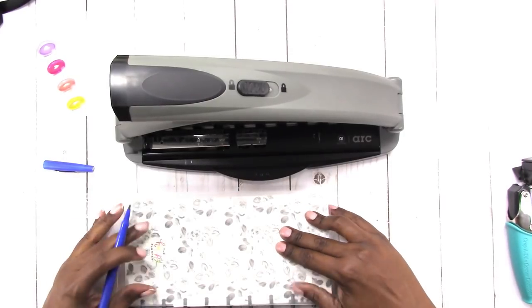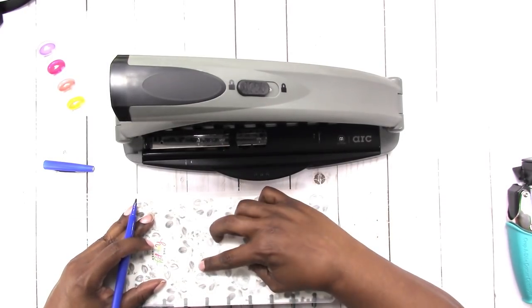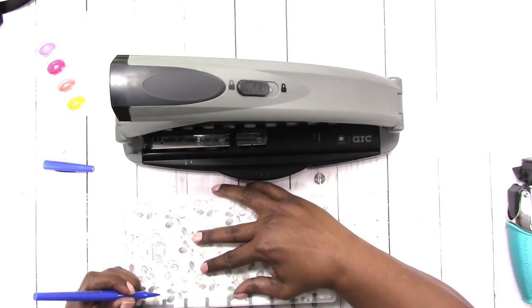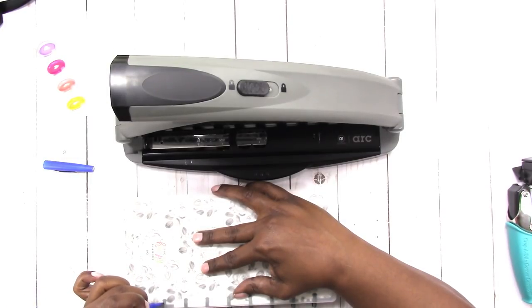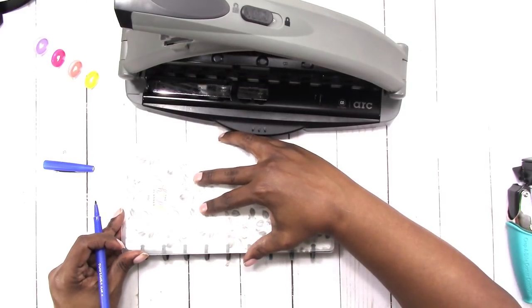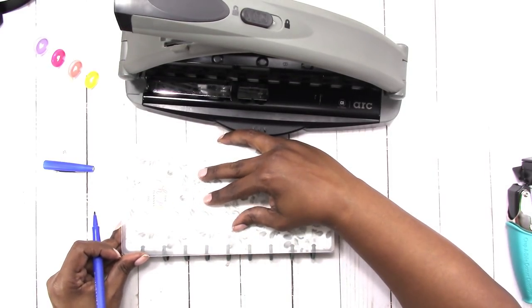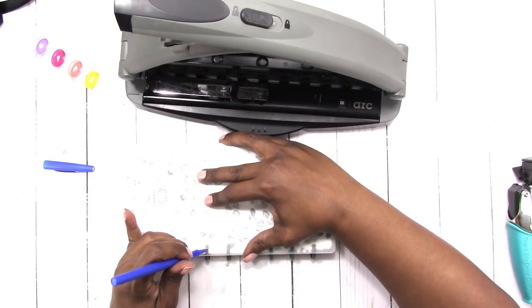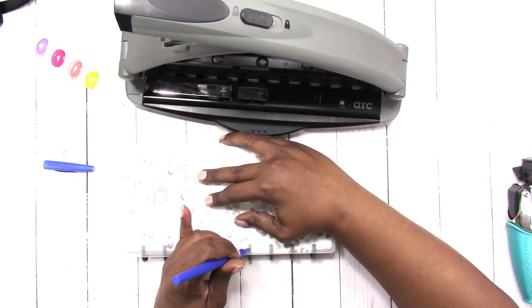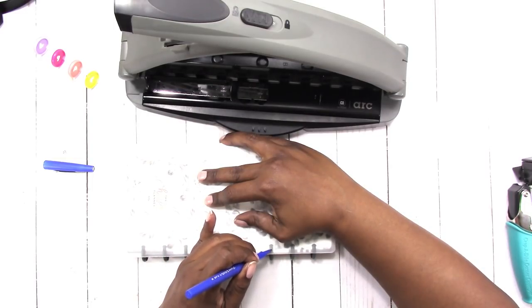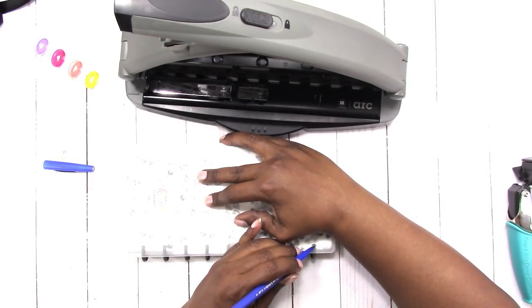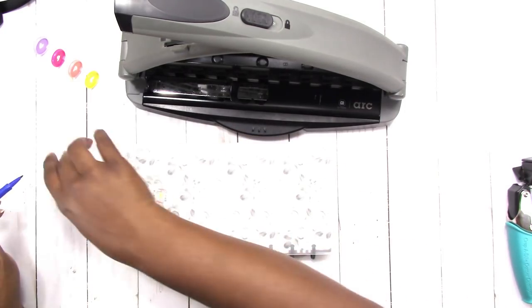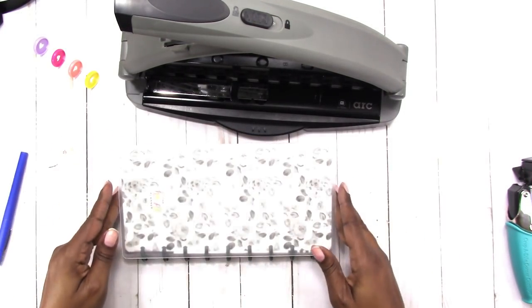So I'm just going to place this on here because I don't want to get out a template and use my, let's move this up so you can see what I'm doing, use my blue Flair. Hopefully this will come off. I mean, if Sharpie comes off, this should come off, right? Okay, to mark where the holes need to be.